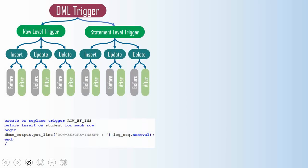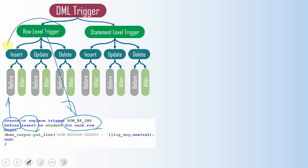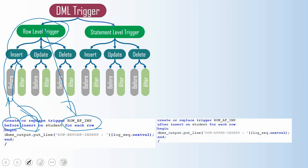If you see the keyword FOR EACH ROW, then this is a row level trigger. If you see the BEFORE or AFTER keyword — in this case it is BEFORE — then this is a before trigger. You will also find the DML operation keyword; in this case it is INSERT. So this is a row level insert before trigger. Similarly, another trigger here is also a row level trigger but it is an after insert trigger — so a row level after insert trigger.